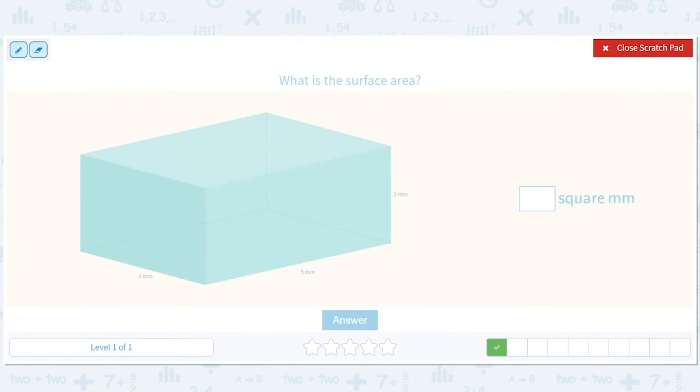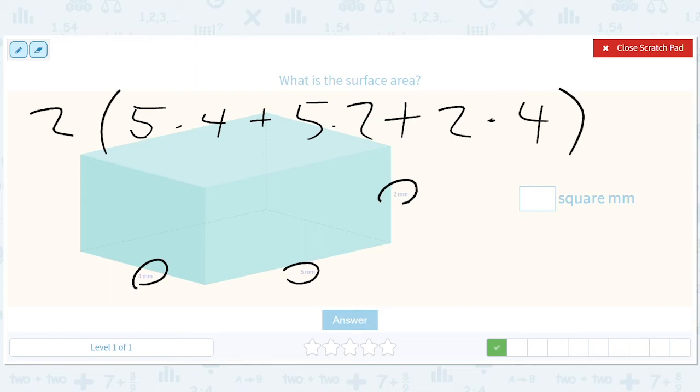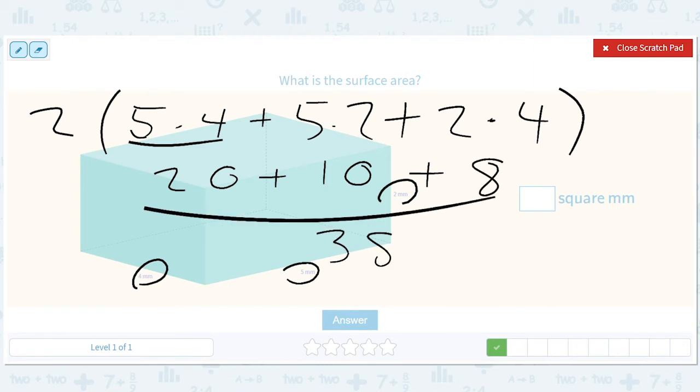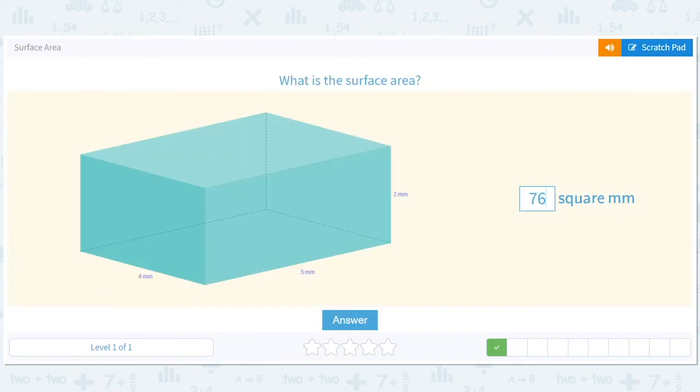Let's work it out with the formula. So we have 5 times 4 plus—just take all these numbers and multiply them in every which way and add them—5 times 4 plus 5 times 2 plus, what's the one we missed, 2 times 4. And then you just add them all and multiply it by 2. So this is going to be 20, this is going to be 10, and this is going to be 8. So this whole thing is 38 times 2 is 76. So 76.